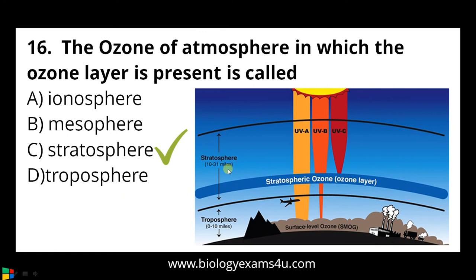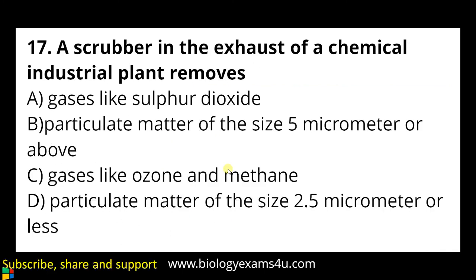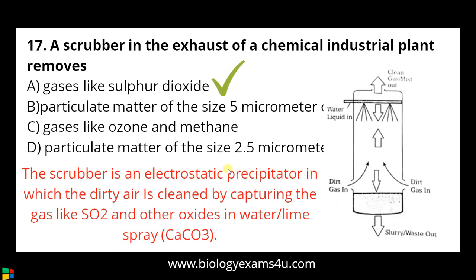Question number seventeen: a scrubber in the exhaust of a chemical industrial plant removes — a) gases like sulfur dioxide, b) particulate matter of size 5 micrometers or above, c) gases like ozone and methane, d) particulate matter of size 2.5 micrometers or less. The answer is gases like sulfur dioxide. A scrubber is an electrostatic precipitator involved in cleaning dirty air by capturing gases like SO2 and other oxides using a water spray.